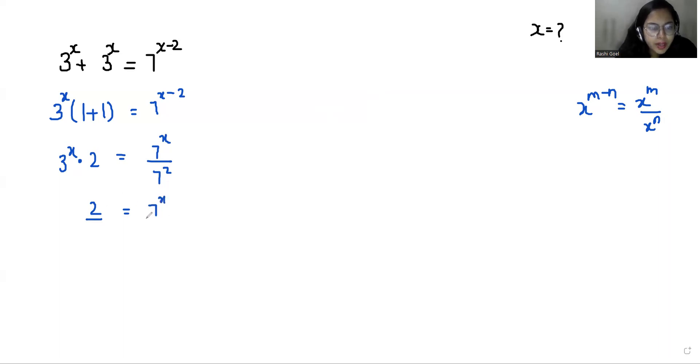7 power x by 49 times 3 power x. So 2 times 49 equals 7 power x by 3 power x.